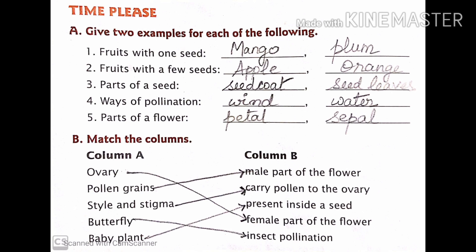Part B is match the following, column A and column B. First is ovary which is matched to female part of a flower, pollen grains which is male part of the flower, style and stigma carry pollens to the ovary, butterfly insect pollination, and the last one baby plant which is present inside a seed.